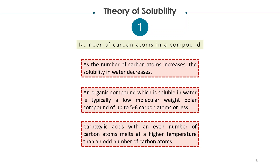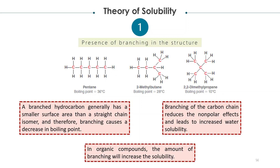Carboxylic acids with an even number of carbon atoms melt at higher temperatures than those with an odd number of carbon atoms. The presence of branching in the structure is the third factor in the theory of solubility. A branched hydrocarbon generally has a smaller surface area than its corresponding straight-chain isomer, and therefore branching causes a decrease in boiling point. Branching of the carbon chain reduces the non-polar effects and leads to increased water solubility, since more branching reduces the size or volume of the molecule and makes it easier for solvents to solvate the molecules.